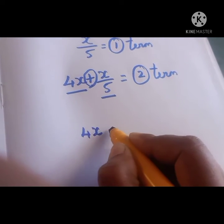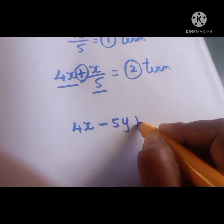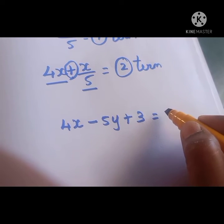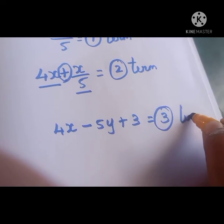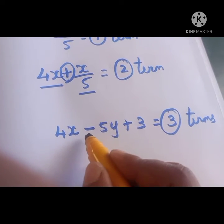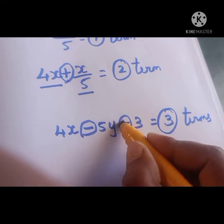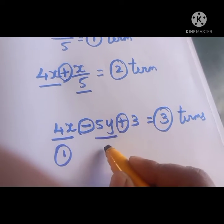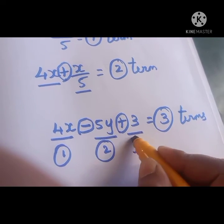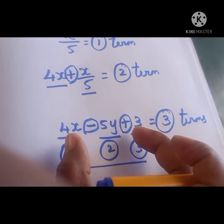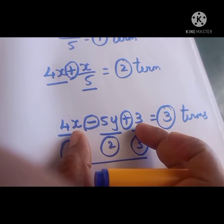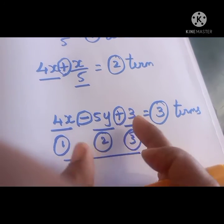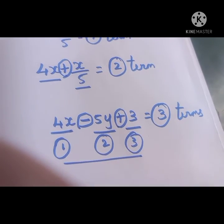Let us see an example: 4x minus 5y plus 3. How many terms are there in this expression? 3 terms. Here there is 1 minus sign and 1 plus sign, so 4x is 1 term, 5y is another term, and 3 is another term — totally 3 terms. Terms are separated by minus and plus signs.